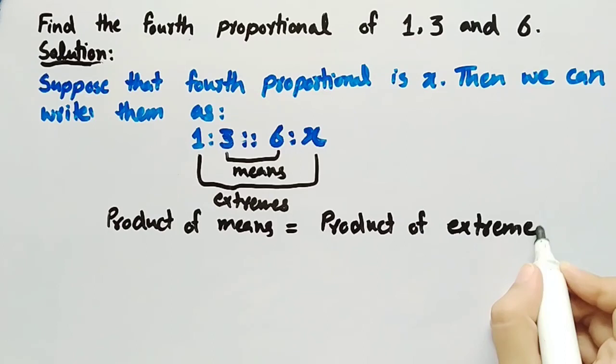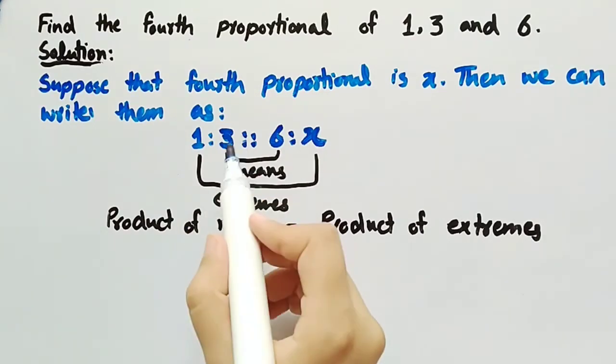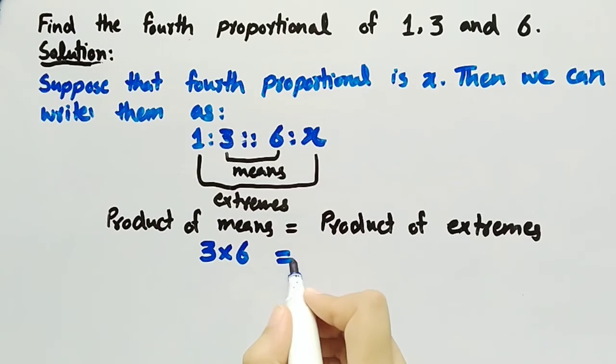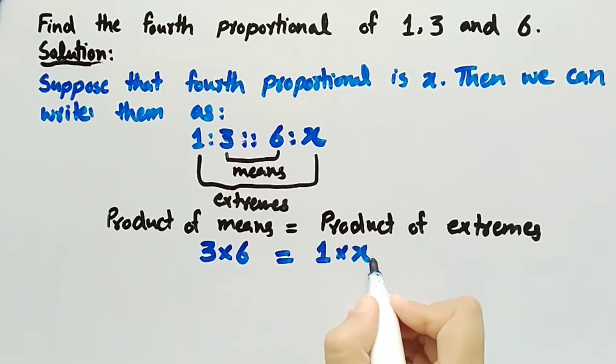So by using this, we can write product of means as 3 multiplied by 6, equal to product of extremes which is 1 multiplied by X. This can be rewritten as 18, since 3 times 6 is 18, equal to X.